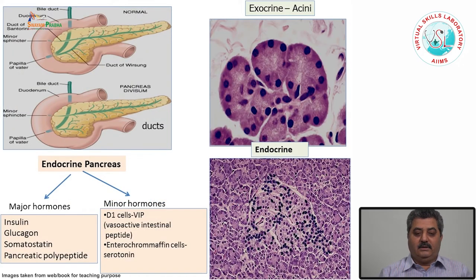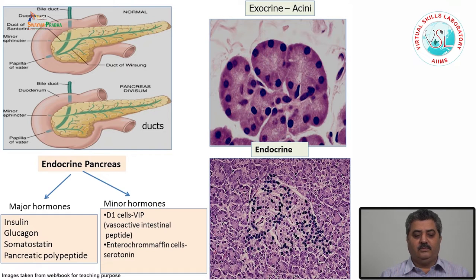The pancreatic neuroendocrine part, which is present throughout the pancreas, comprises islet cells. The islet cells are of two types: one are the major hormone-producing islet cells and others are the minor hormone-producing. The majors are insulin, glucagon, somatostatin and pancreatic polypeptides.